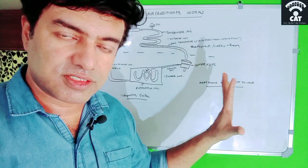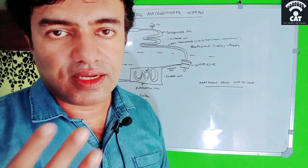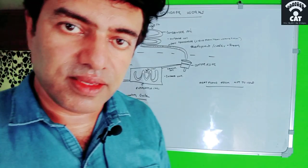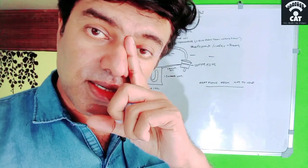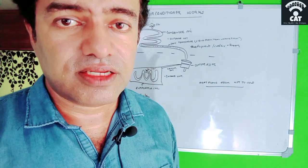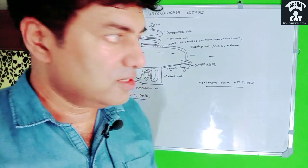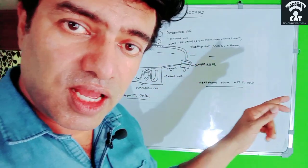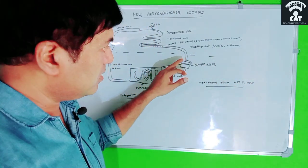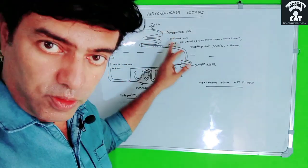The vapor refrigerant first reaches the compressor. The compressor will compress it so that the molecules come closer together, the kinetic energy becomes high, and the refrigerant develops heat and pressure. So after compression, the refrigerant is at high temperature and high pressure. That is the function of the compressor — to make the refrigerant at high temperature and high pressure.